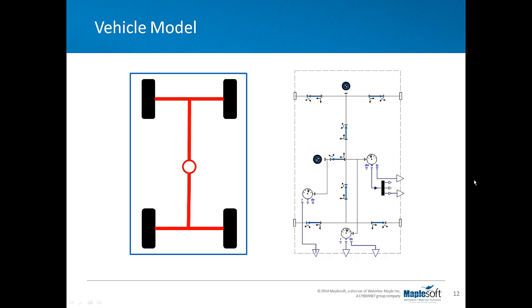Then by adding some sensors to capture the vehicle states such as the speed, acceleration and position, we can get the required information or signals for the controller. And also we can look at the vehicle performance and its trajectory.